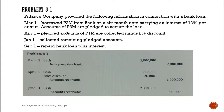On June 1, there is a collection of the remaining pledged accounts. The original pledged amount was 3 million; we already collected 1 million, so the remaining amount is 2 million. The entry is: debit cash 2 million, credit accounts receivable 2 million.